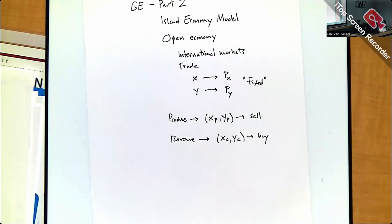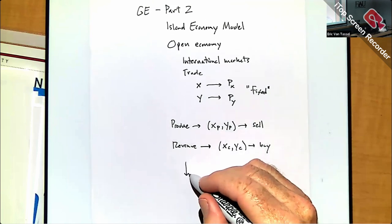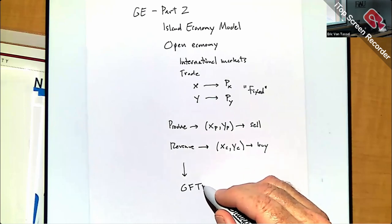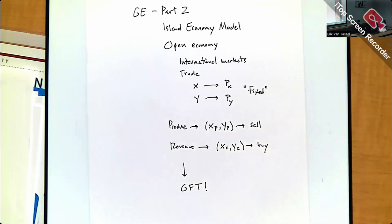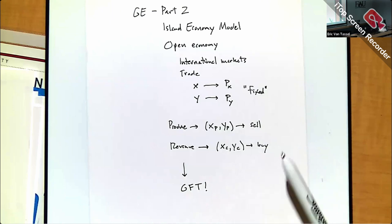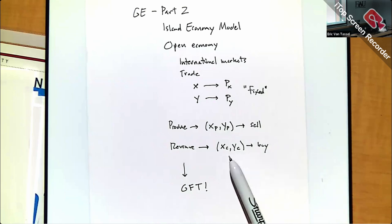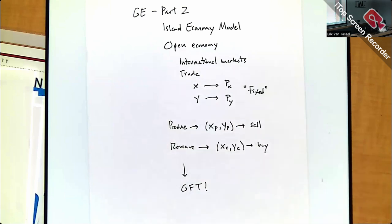Using the model setup, you can show fairly easily that you can gain from trade. In the closed economy, the country had to pick a consumption basket on the PPF — anything else was not feasible. Once you have access to international markets, you're able to lift yourself off the PPF and pick a basket that would otherwise not be feasible, generating gains that make you better off than keeping the economy closed.